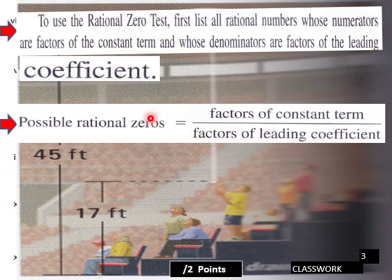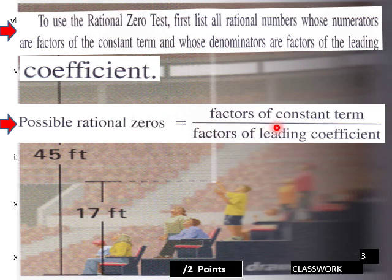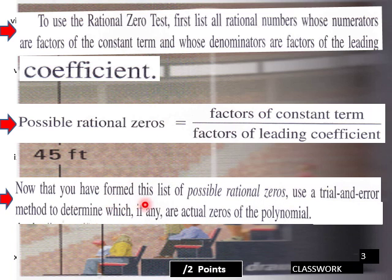To use the rational zero test, first list all rational numbers whose numerators are factors of the constant term — so the constant goes in the numerator — and whose denominators are factors of the leading coefficient, which goes in the denominator. If you form this list of possible rational zeros, use a trial and error method to determine which, if any, are actual zeros of the polynomial. This is one method of doing it — if your graphing calculator breaks down or your battery goes dead, you could try this method.